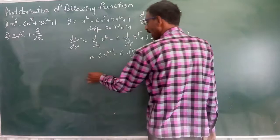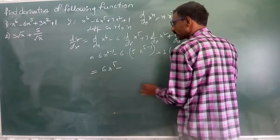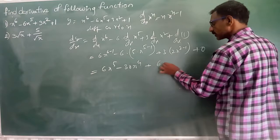Then we get 6 into x to the power of 5. Minus 6, 5 is 30, so 30 into x to the power of 4. Plus 2, 3 is 6, so 6x. This is answer. Now we will go to this one.